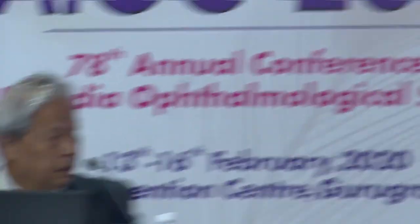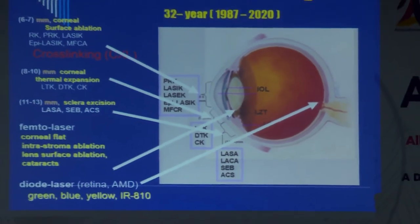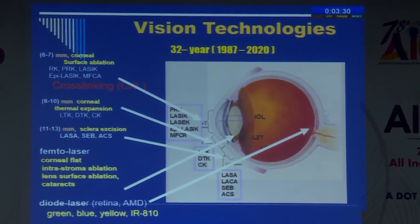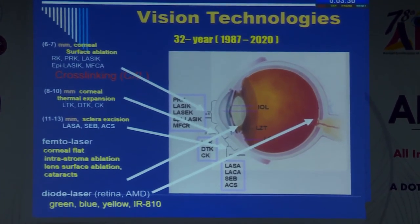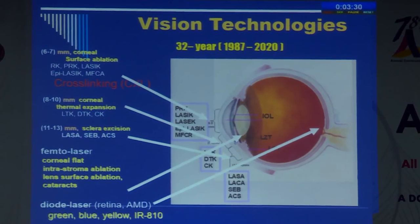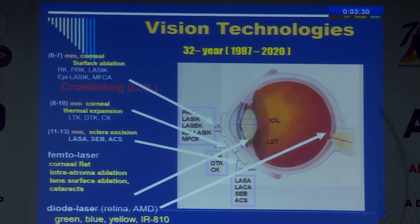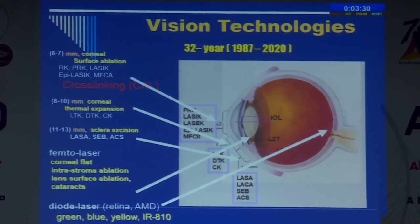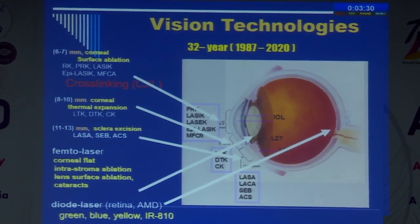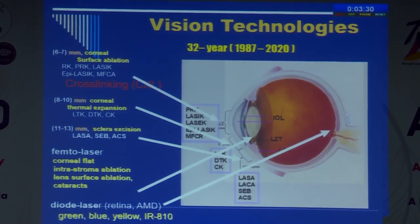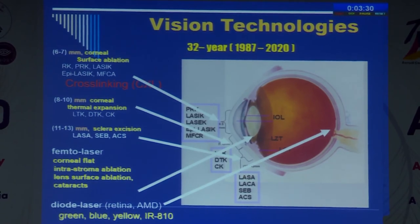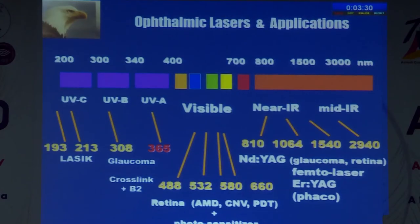Dr. J.T. Lin presents a 10-minute overview of recent progress in CXL. Over the past 32 years, the technology has gone from RK to PRK to LASIK, and the most recent addition is cross-linking. Cross-linking is performed at 365nm UVA (UVA-A), with UVA having subtypes A, B, and C. UVA-A is safer for eye safety than UVB or UVC. UVA is not the only wavelength — green or near-infrared can also be used with different photosensitizers.